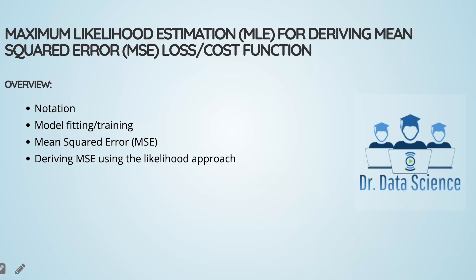Mean squared error or MSE is a widely used loss or cost function for solving regression problems. In this video, we want to discuss the connections between MSE and the maximum likelihood estimation approach, which is a common technique for statistical inference. We are going to see that under some conditions, we can prove that mean squared error is very much related to solving the maximum likelihood estimation in the case of regression problems.